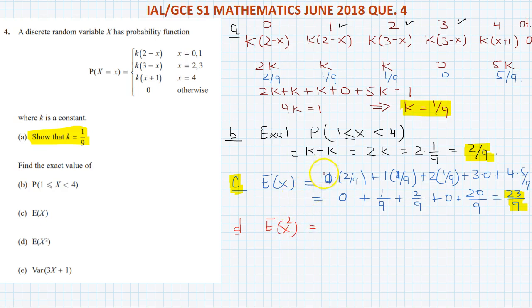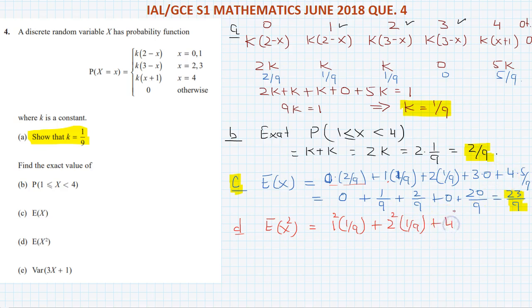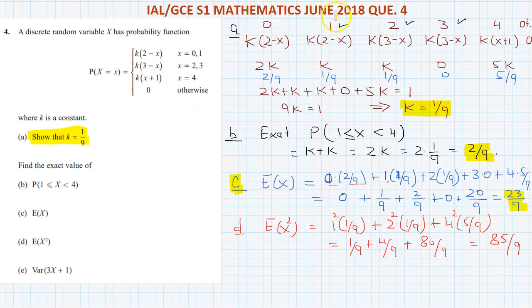Part D is E(X²). We compute: 1² × (1/9) plus 2² × (1/9) plus 4² × (5/9), which equals 1/9 plus 4/9 plus 80/9, giving E(X²) = 85/9.